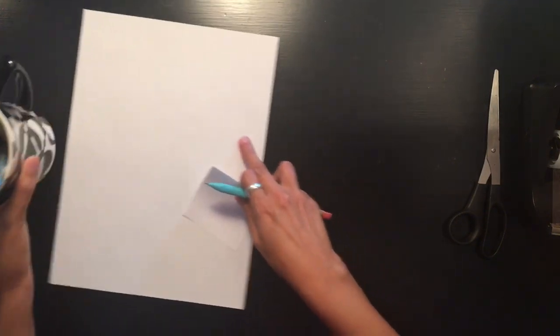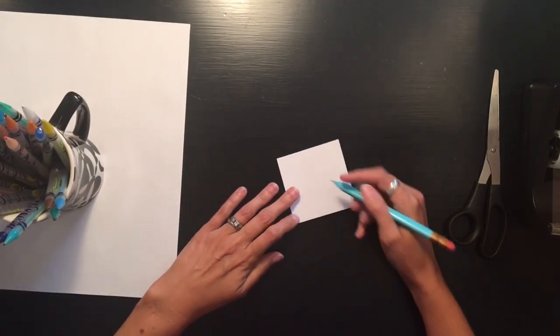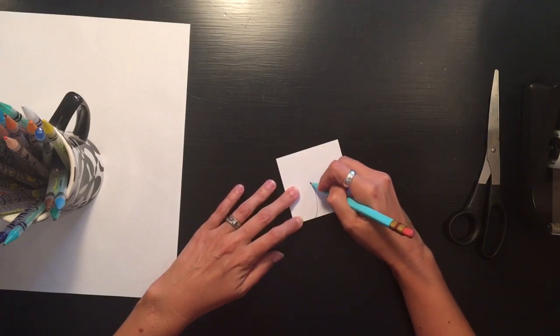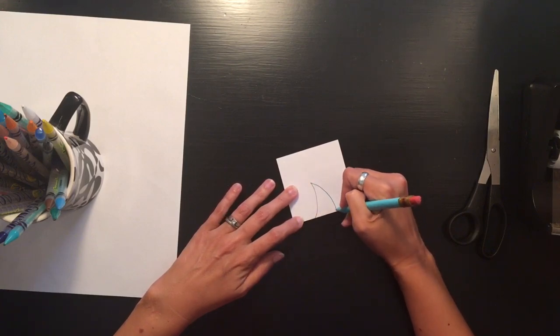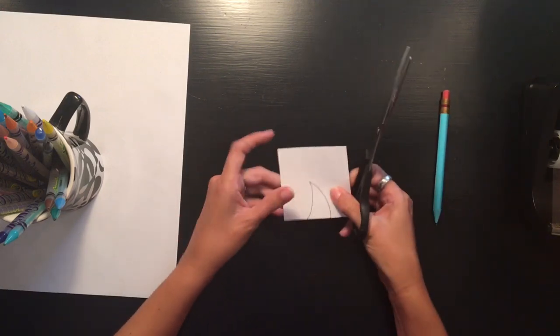We will begin by drawing a shape that comes in from one side of the square. I'm going to start with a curved triangle, and I recommend after you draw the first shape to go ahead and cut it out.